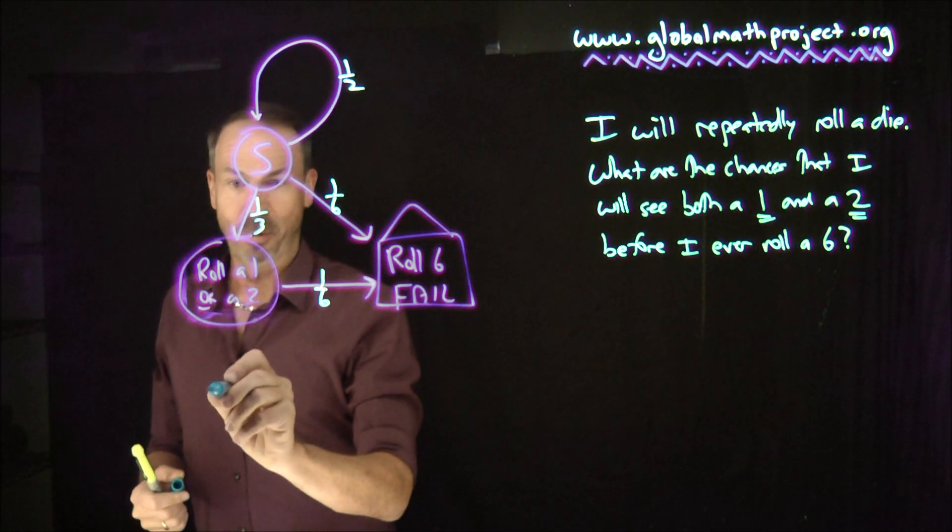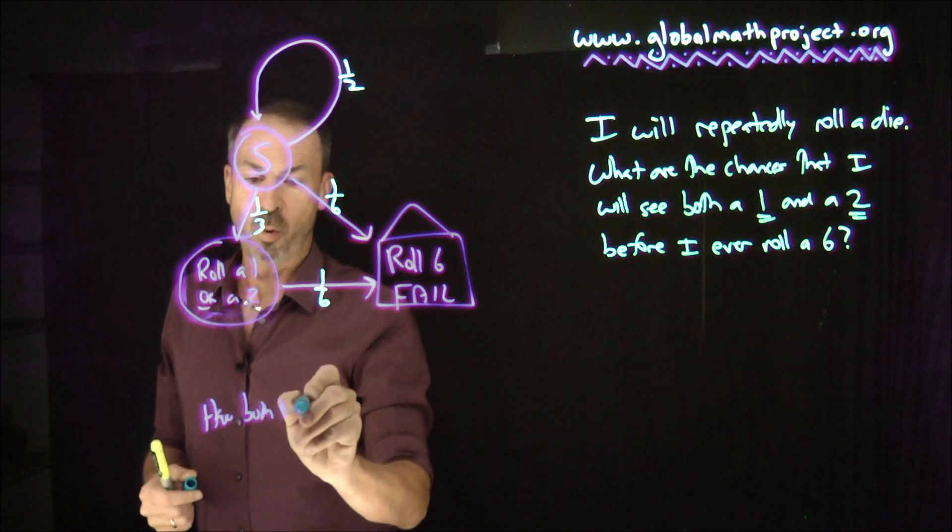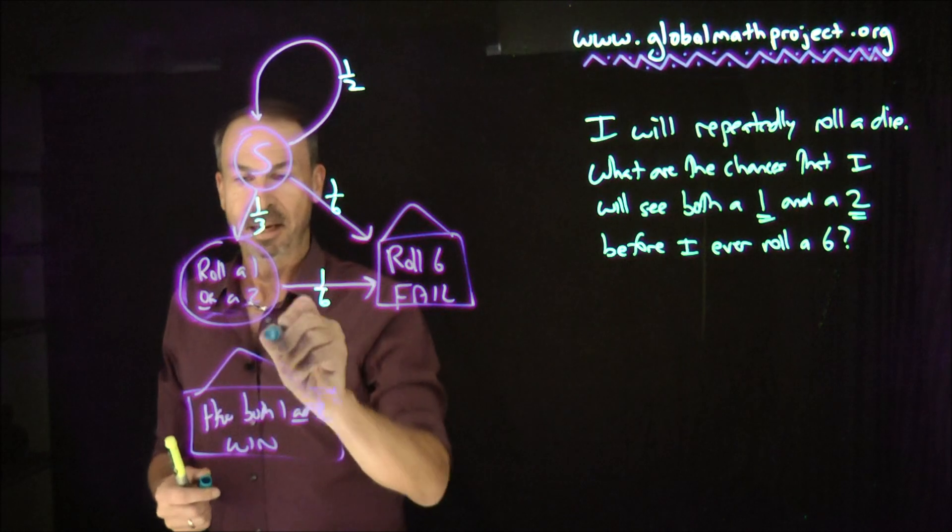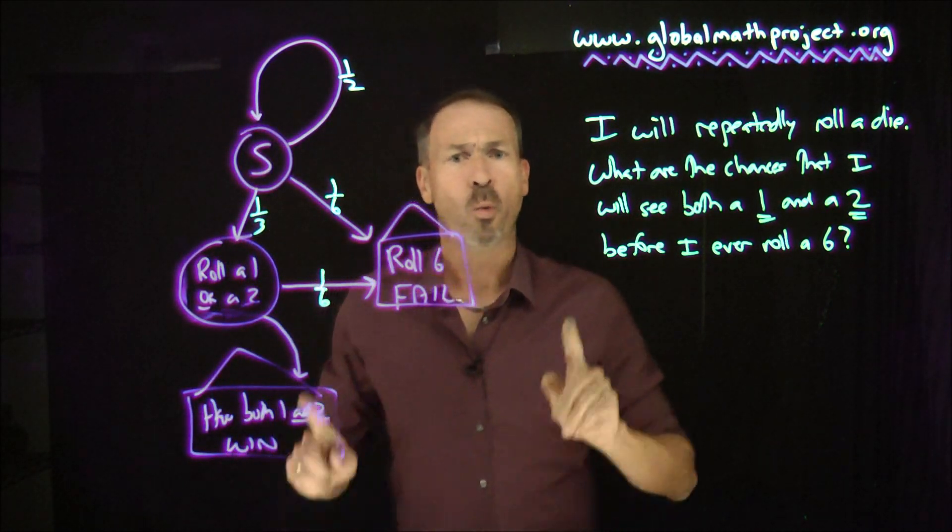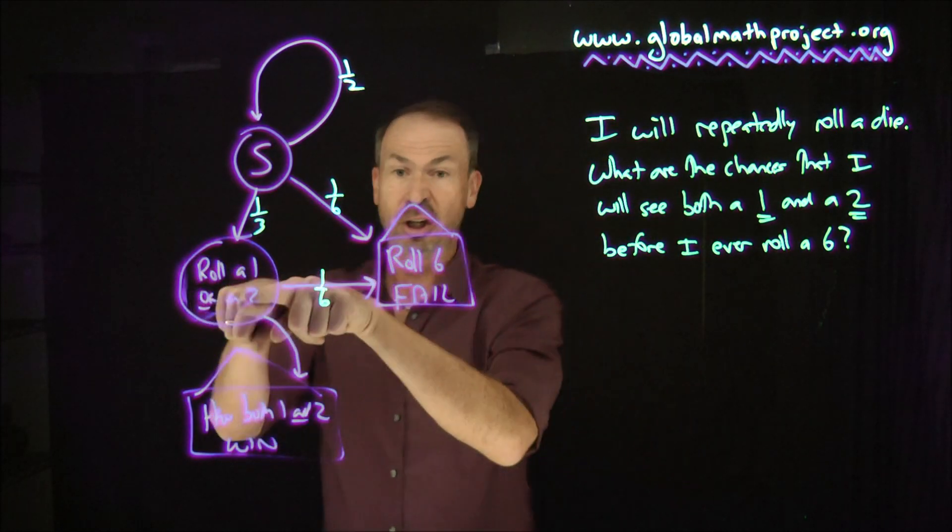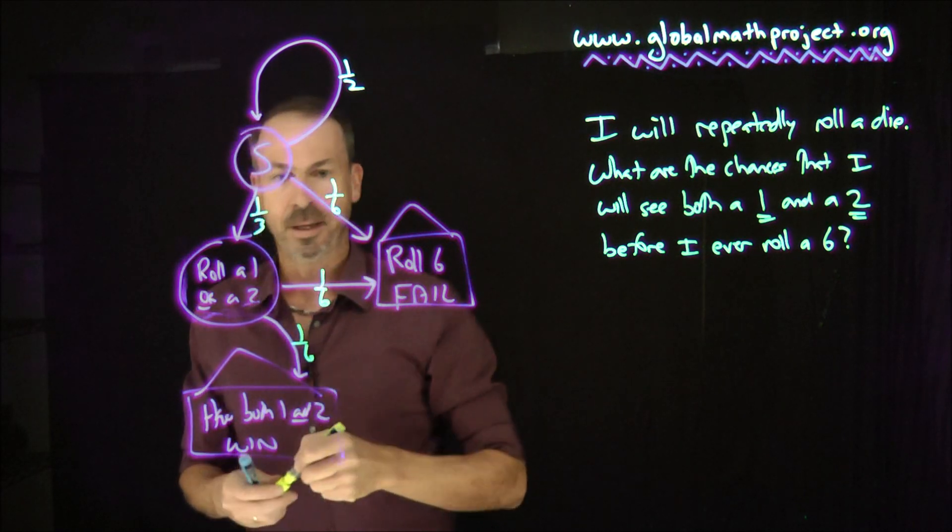So rolling the other number gives them a win. Those people, if they roll the other number, will have both 1 and 2. They win. So that will send people to the win house. And that would be one-sixth of them, because if you've got a 1, you've got to get a 2, one-sixth chance. Or if you've got a 2, you've got to get a 1, one-sixth chance. One-sixth, one-sixth.